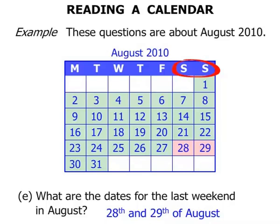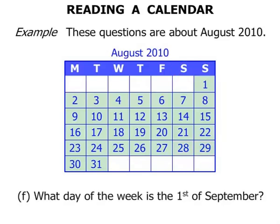What day of the week is the 1st of September? Well we've got the calendar for August, not September, but September is the next month. We can see that the last day in August is the 31st. Sometimes on calendars you might have the next few days in a grey or lighter colour — that's for the next month. Also, before the start of the month, you may also get some numbers; that would be July. But to answer this question, the 1st of September would be on a Wednesday.